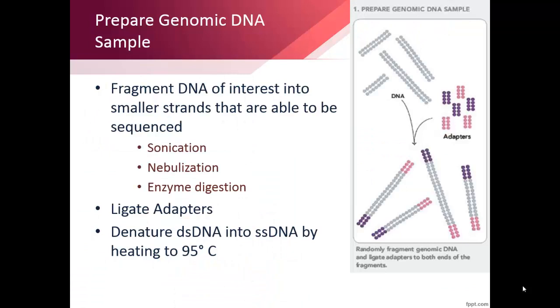The first step is to prepare the genomic DNA sample, or the library. These basic first steps are found in all sequencing methods, because a strand cannot be sequenced if it is too large or if it is double-stranded. Therefore, the DNA is fragmented into 300 to 800 base pairs long, and then denatured at 95 degrees Celsius.